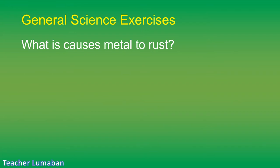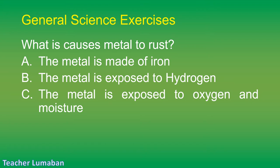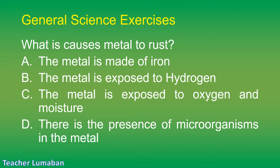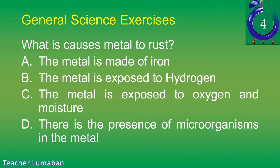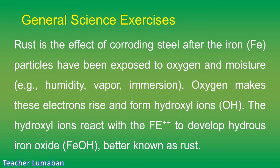What causes metal to rust? Letter A: the metal is made of iron. Letter B: the metal is exposed to hydrogen. Letter C: the metal is exposed to oxygen and moisture. Letter D: there is the presence of microorganisms in the metal. The correct answer is Letter C: the metal is exposed to oxygen and moisture. Rust is the effect of corroding steel after iron particles have been exposed to oxygen and moisture. Oxygen makes electrons rise and form hydroxyl ions (OH⁻); the hydroxyl ions react with iron to develop hydrous iron oxide (Fe(OH)₃), better known as rust.